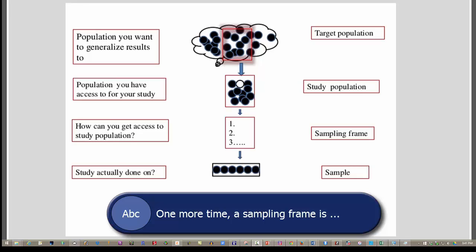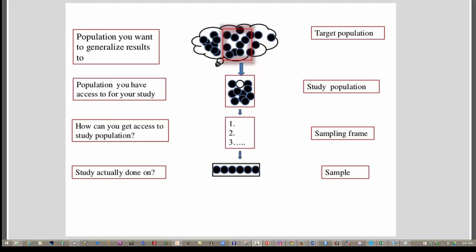So for example, if we had a list of all students at the university, we might have a list of 1 to 15,000, and that would be our sampling frame. And then from that sampling frame, we would draw a random sample of individuals.